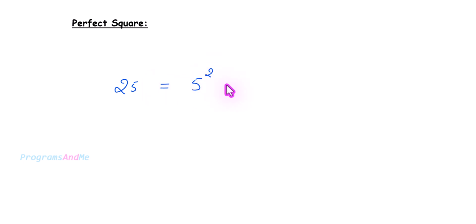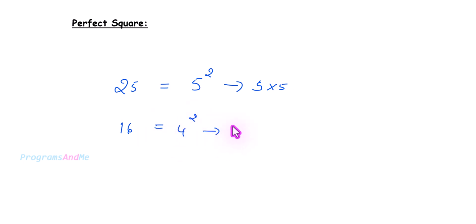An integer that can be expressed as the square of another integer is called a perfect square. For example, 25 is a perfect square because it is 5 squared — when I multiply 5 by 5 I get 25. Similarly, 16 is a perfect square because it is 4 squared. A perfect square is the product of the same integer with itself.